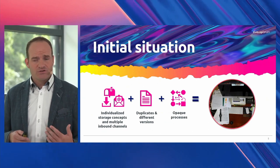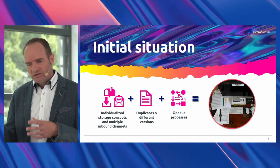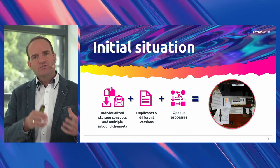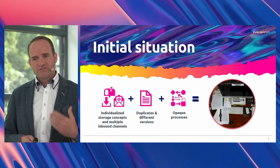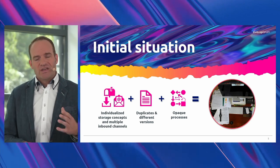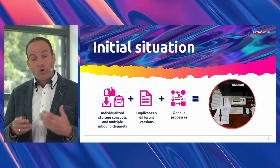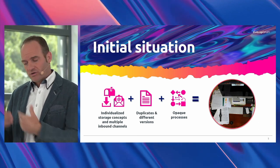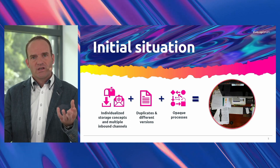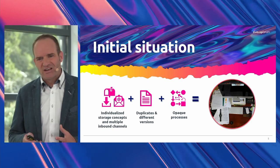That leads to several issues. You get multiple inbound channels that lead to individual storage concepts. Users store information themselves — emails in Outlook, documents in local data storage. That leads to duplicates of the same documents and different versions: user A is working with a document from his local storage, and user B is working with the same document from his storage. Both are working on different versions, leading to opaque and non-transparent processes. Long story short, it is informational chaos.